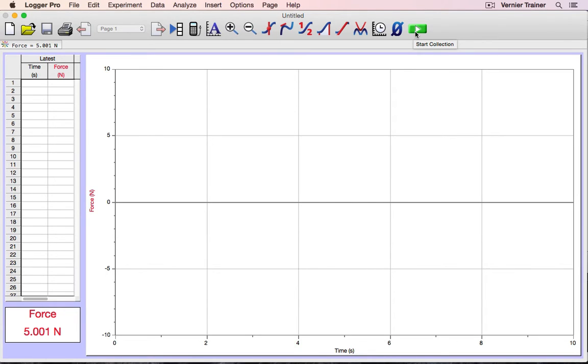If the collect button is grayed out, you won't be able to collect any data. Usually that happens if Logger Pro doesn't detect any sensor or an interface. Check your connections. It's likely that one isn't completely plugged in.